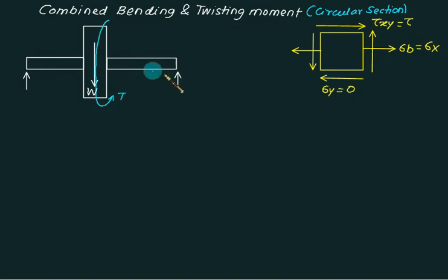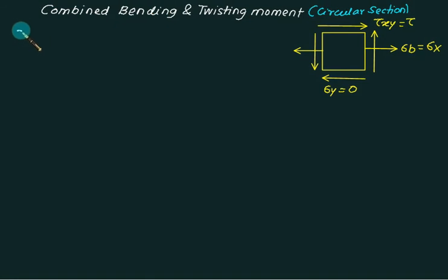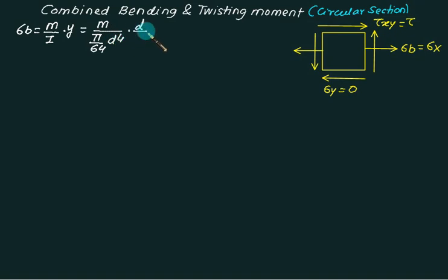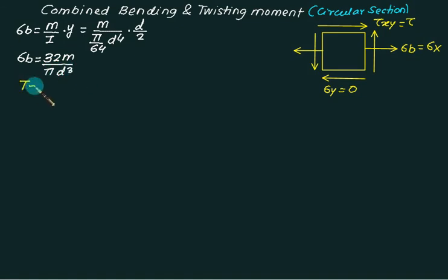This shaft is supported on two ends with a flywheel of weight W. Because of this the shaft experiences bending moment and torque. Our section is circular. For a circular section, sigma_b is given by M/I × y, where I = π/64 × d⁴ and y is maximum at d/2. Solving this gives sigma_b = 32M / (πd³).